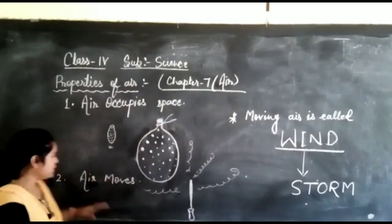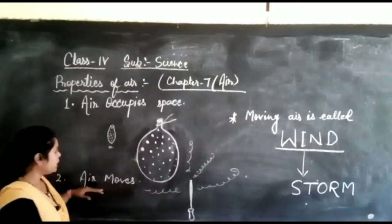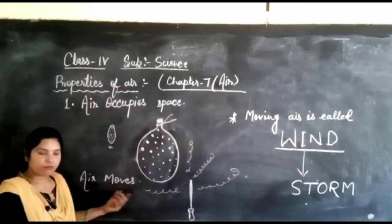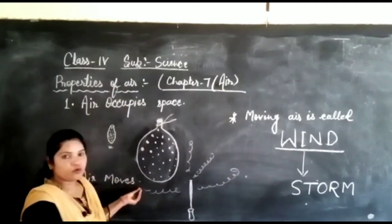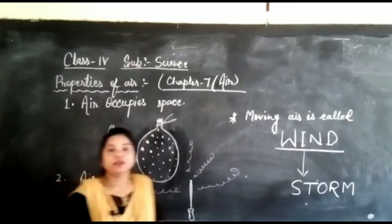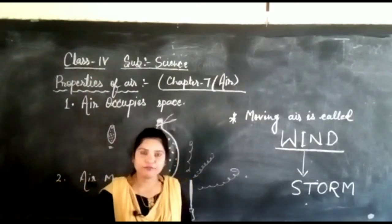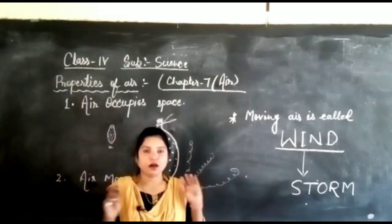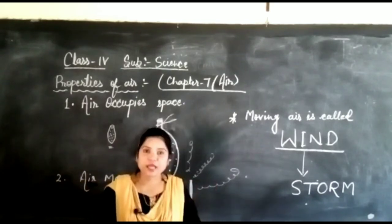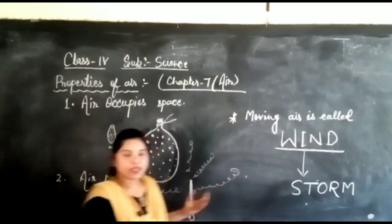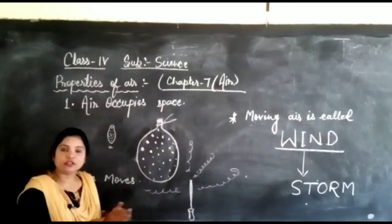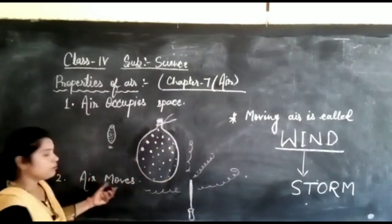Now the second property is air moves. Air moves, it means air blows. We can prove this property by a very simple method. When we spray deodorant or any perfume, it spreads out all around us. So we can smell it, others also can smell it. So it means the scent of perfume or deodorant spreads out with the air. It means air moves.